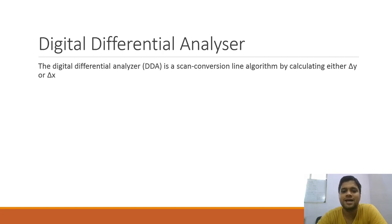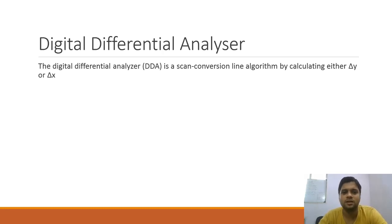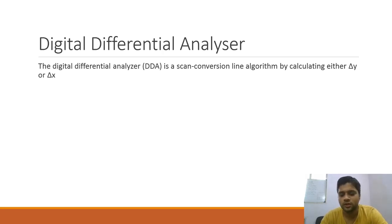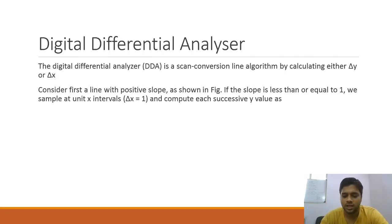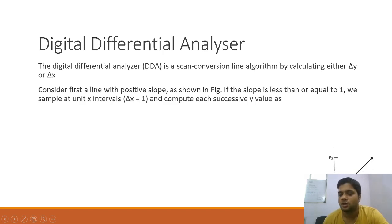The Digital Differential Analyzer is a scan conversion line algorithm that works by calculating either delta y or delta x. Delta y is the difference y2 minus y1, and delta x is x2 minus x1. We find which difference is larger and use that for further calculations. Consider a line with a positive slope less than or equal to 1 — that is, a line in the region between 0 degrees and 45 degrees.